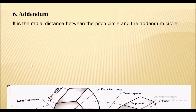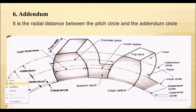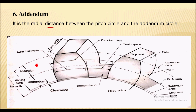Next is the addendum. The addendum is the radial distance between the addendum circle and the pitch circle, as shown in the figure.